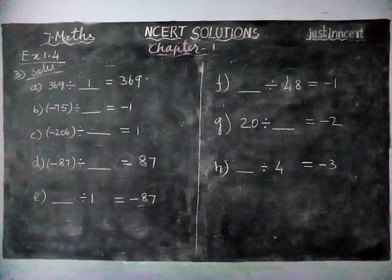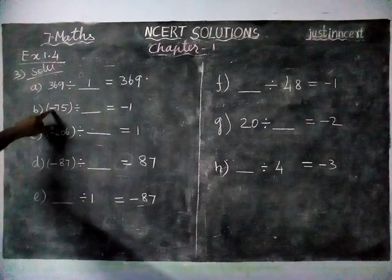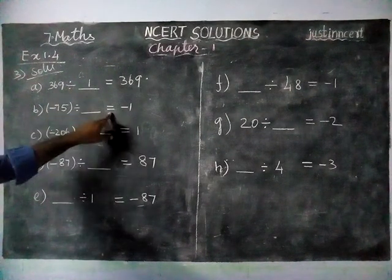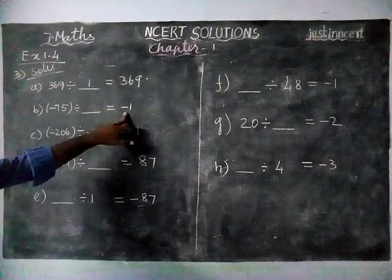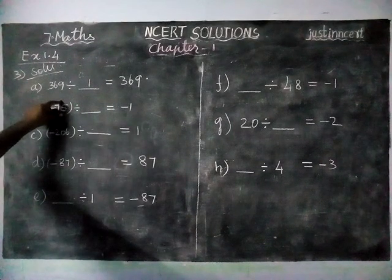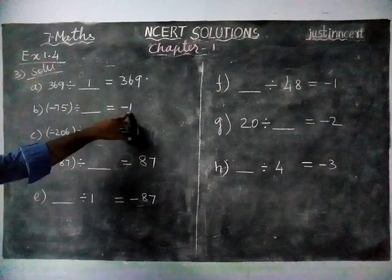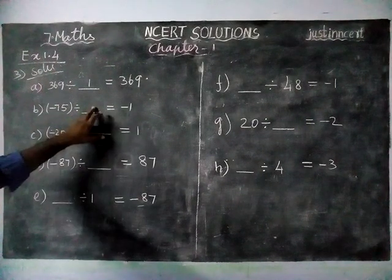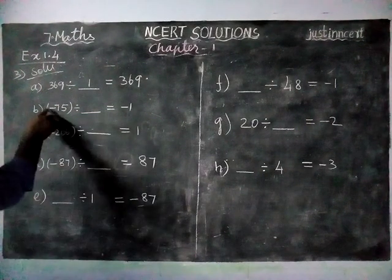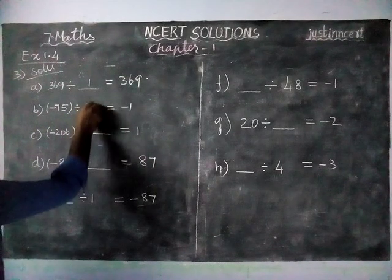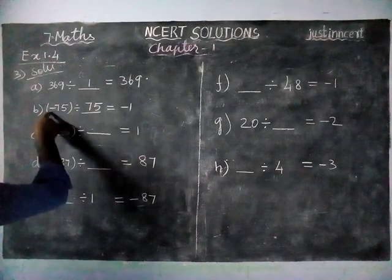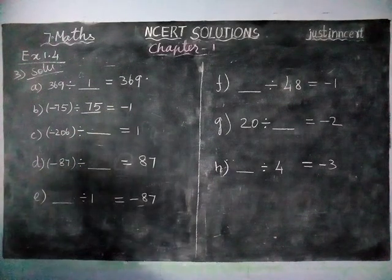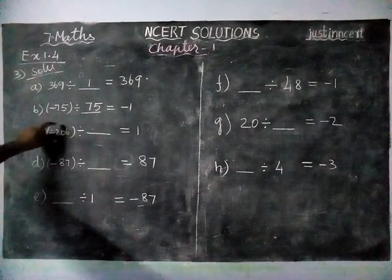Next: minus 75 divided by an unknown number is equal to minus 1. When you divide a number by the same number you get 1. Here we are getting minus 1, so one number is minus and the next is plus. So minus 75 divided by 75 is equal to minus 1.